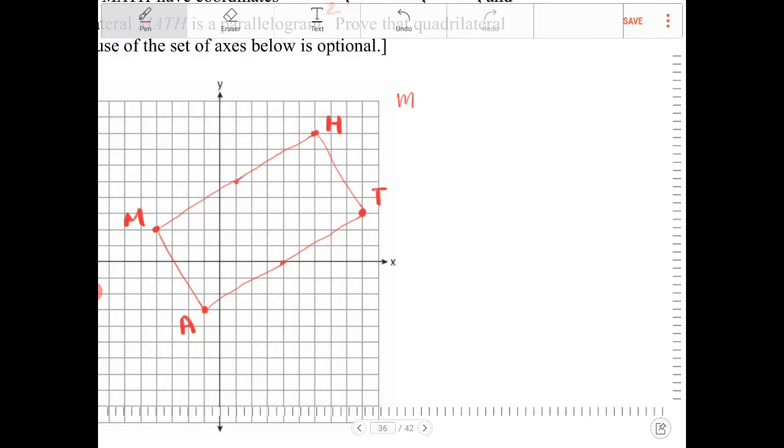So therefore, MATH is a parallelogram. And then the second statement I can make is if adjacent sides have negative reciprocal slopes, then adjacent sides are going to be perpendicular, which then makes this a rectangle, because perpendicular sides form right angles. And a parallelogram with right angles is a rectangle.